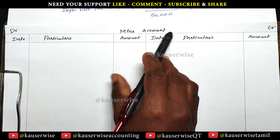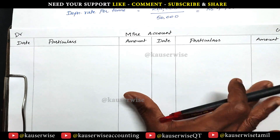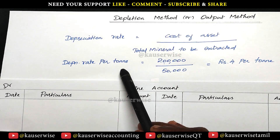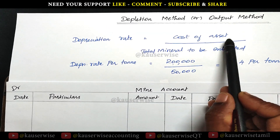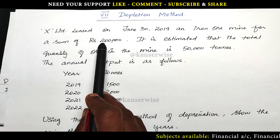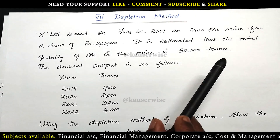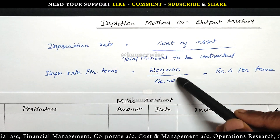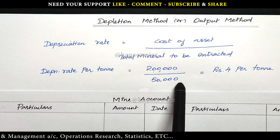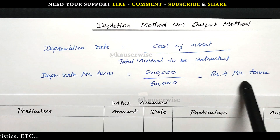Now let's see the solution — the mine account with debit side and credit side, date, particulars, and amount columns. Before we prepare the mine account, first we need to calculate depreciation rate per ton. The formula is: cost of assets divided by total mineral to be extracted. The cost of the asset is 2 lakh and total minerals to be extracted is 50,000 tons. Applying these values: 2 lakh divided by 50,000 gives us 4 rupees per ton. This is the depreciation rate per ton.